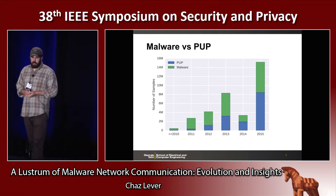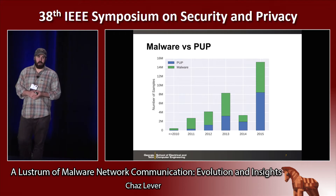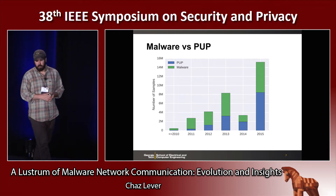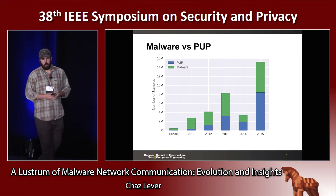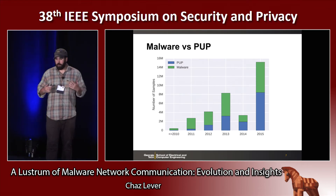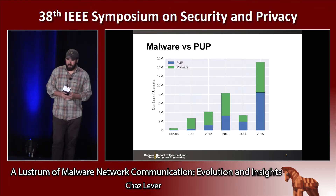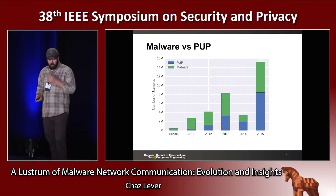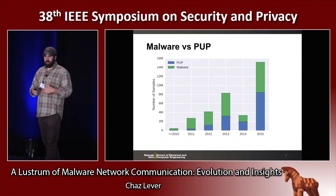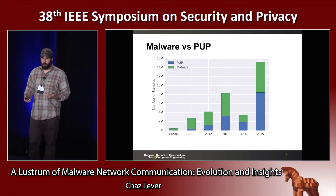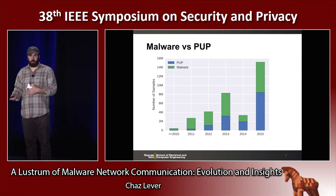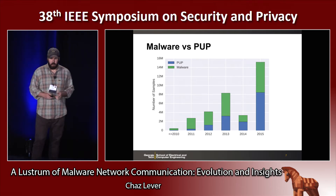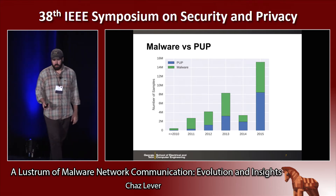Additionally, other work by Thomas et al. has shown that Google Safe Browsing generates roughly three times as many detections for PUP as for malware. So again, this is a nice example where we were able to confirm existing results on a large data set.